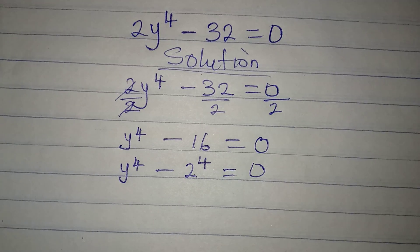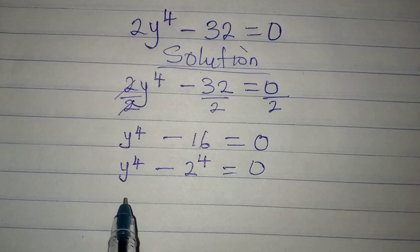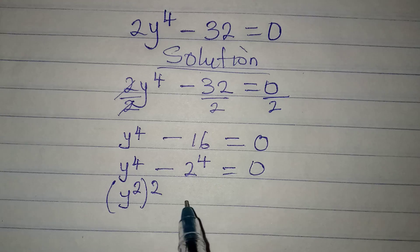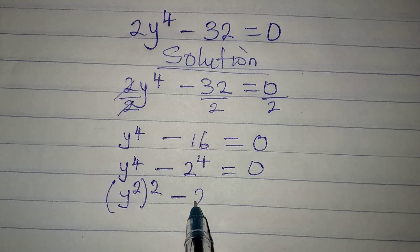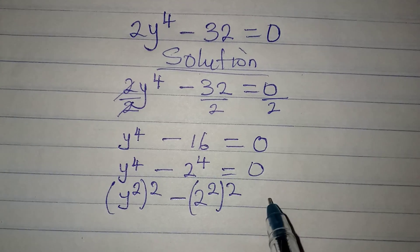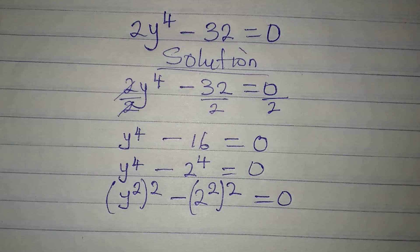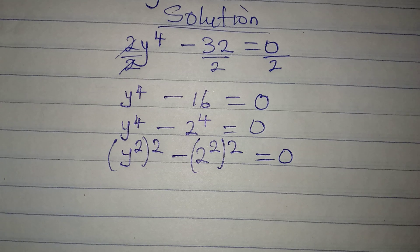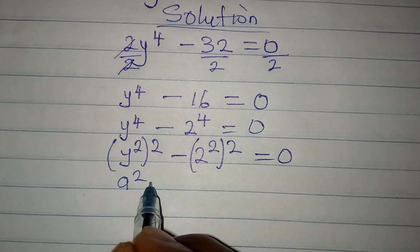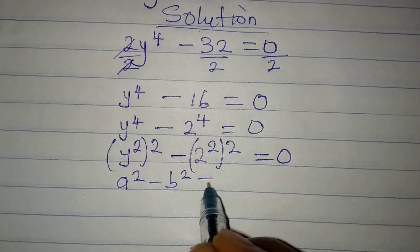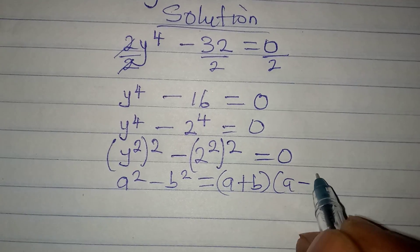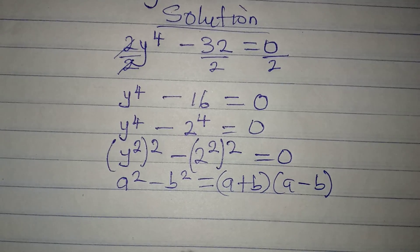Now if we break this into 2, this gives us y to the power of 2, to the power of 2, then minus 2 to the power of 2, to the power of 2. This equals 0. Now we can apply the difference of two squares, because if you have a squared minus b squared, this is the same thing as (a + b)(a − b).